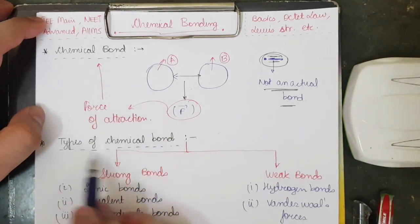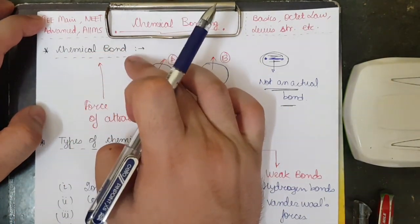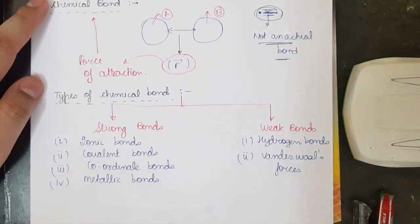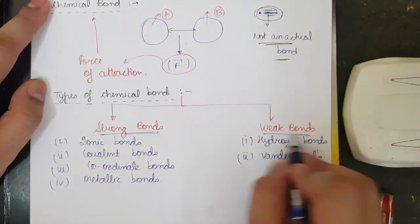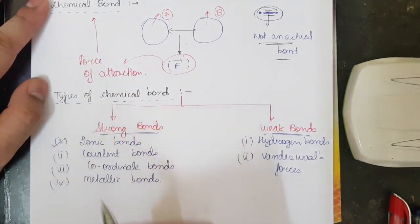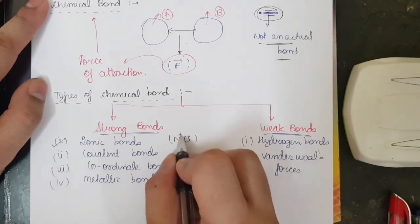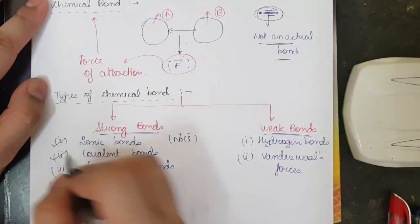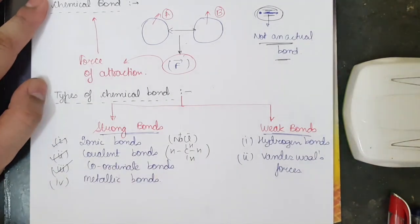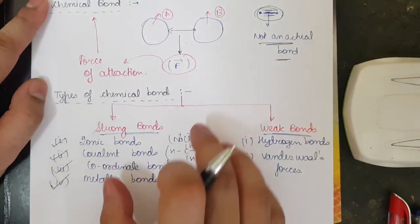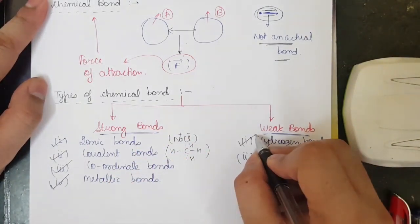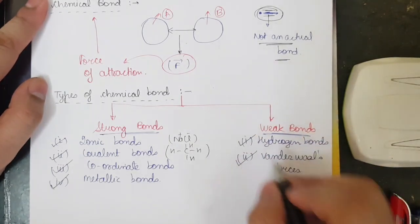Now let's understand how many types of chemical bonds are available. We have strong bonds and we have weak bonds — we will make separate videos; this is just an introduction. Under strong bonds: we have ionic bonds (example: NaCl, where Na+ and Cl- form an ionic bond), covalent bonds (example: methane), coordinate bonds (found in coordination isomerism), and metallic bonds. Under weak bonds: we have hydrogen bonds and Van der Waals forces. We will study all of these properly.